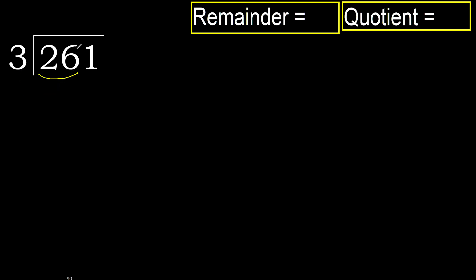With 26: 3 multiplied by which number is nearest to 26 but not greater? 3 multiplied by 9 is 27 — 27 is greater. 3 multiplied by 8 is 24 — 24 is not greater. So 26 minus 24 is 2.